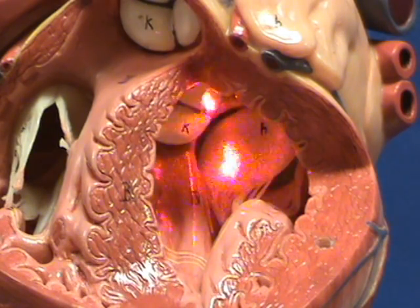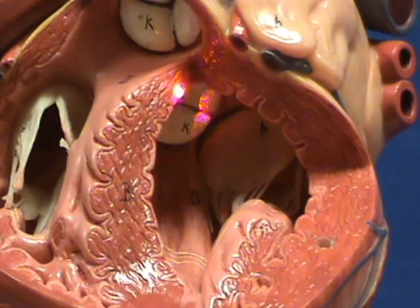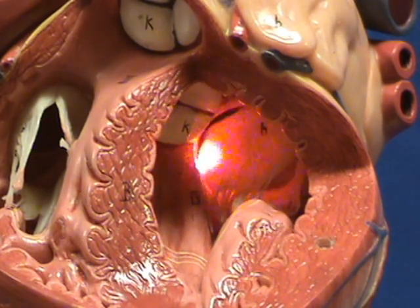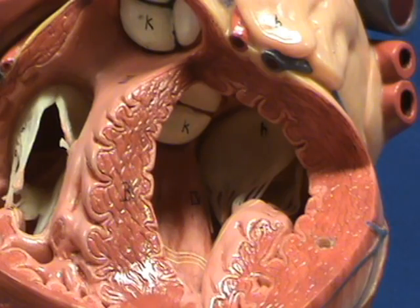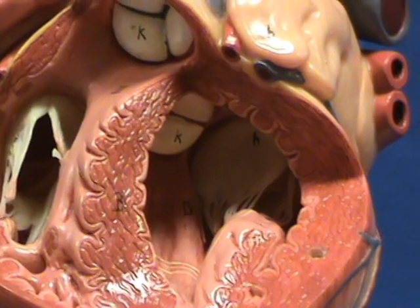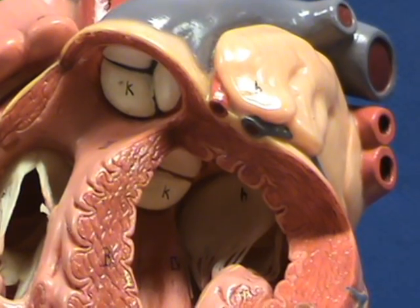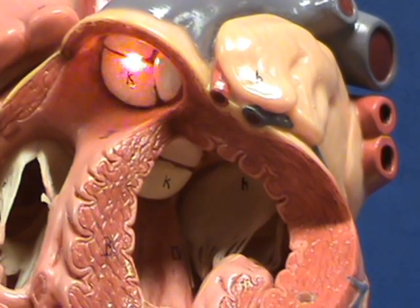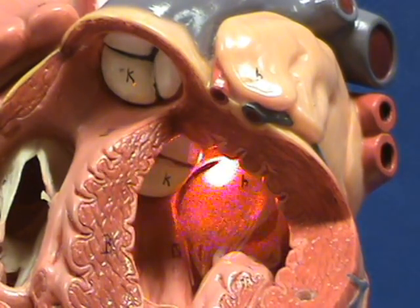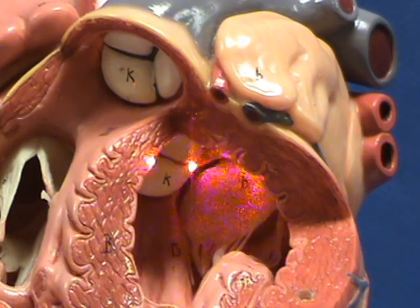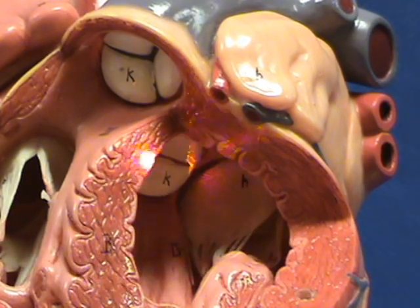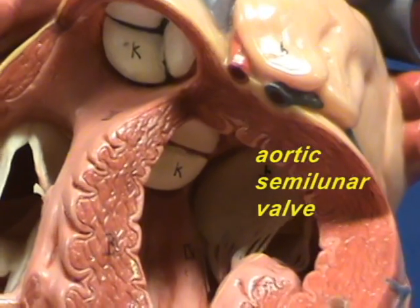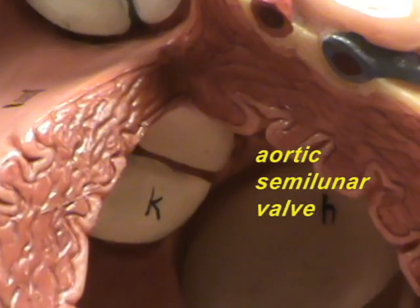Here is the orifice through which blood is going to exit from the left ventricle, and you can see a valve there, which is going to be similar in design to the pulmonary semilunar valve, which is up here. Right over here we have the aortic semilunar valve, which you can see in this model is labeled with that K.